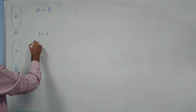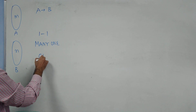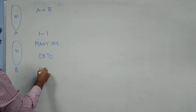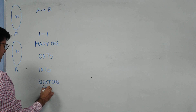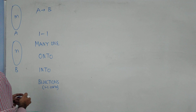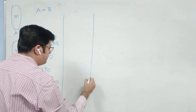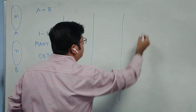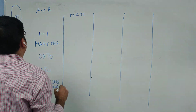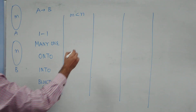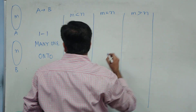The table covers: one-one, many-one, onto, into, and bijections. Bijections means one-one and onto. There are three cases: first when M is less than N (number of elements in A is less than in B), second when M equals N, and third when M is greater than N.